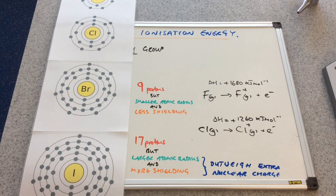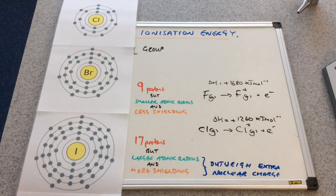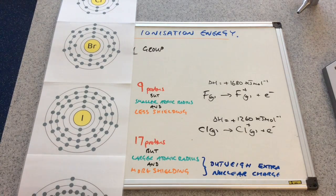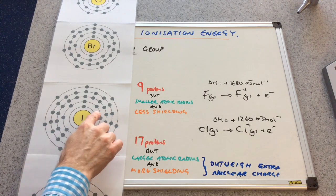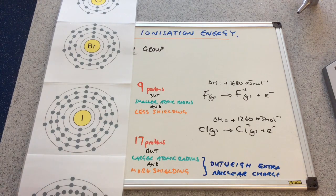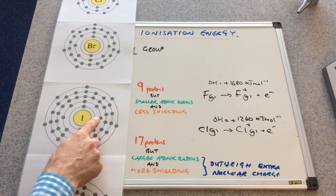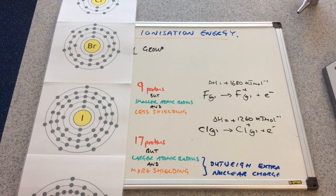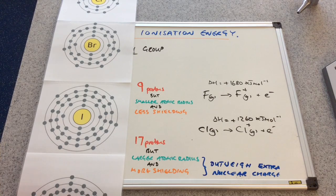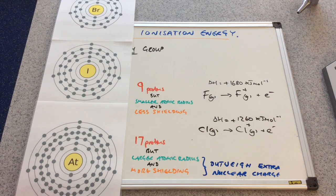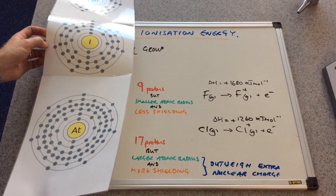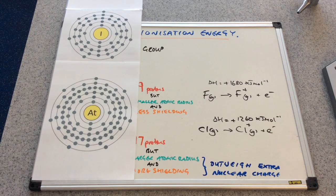Iodine has a larger atomic radius and another shell shielding the attraction. So even though it has more protons and a greater nuclear charge, that's outweighed by these factors, and iodine's first ionisation energy is 1,110 kJ/mol — less again than bromine. Moving to astatine: for the same reasons already discussed, astatine has an even lower first ionisation energy of 910 kJ/mol.